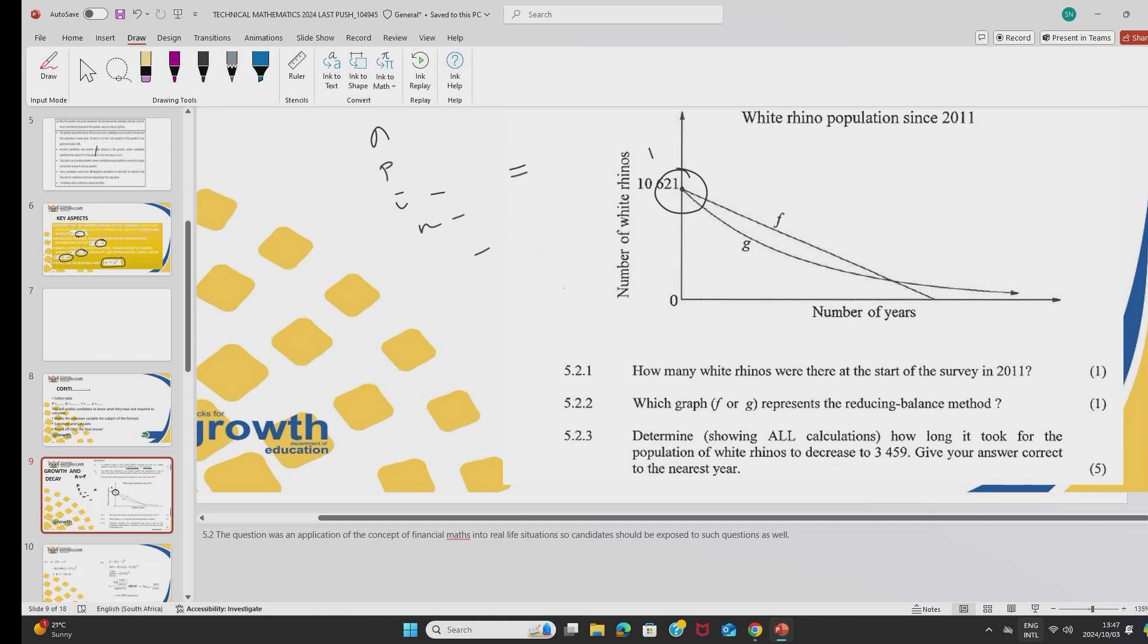Then which graph, G or F, represents a reducing balance. Then a reducing balance, we all know, I said initially, if you see a word exponential depreciation, then that would mean it's a compound decay, a reducing balance, which means exponential. And as we see G here signifies an exponential graph. Then that is how you apply financial mathematics in real life situations.